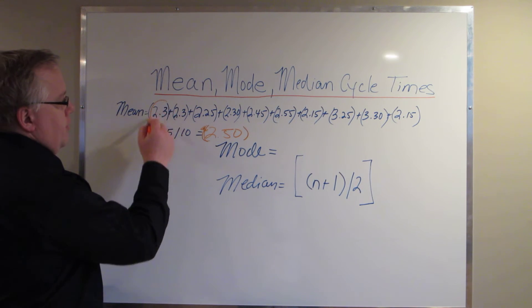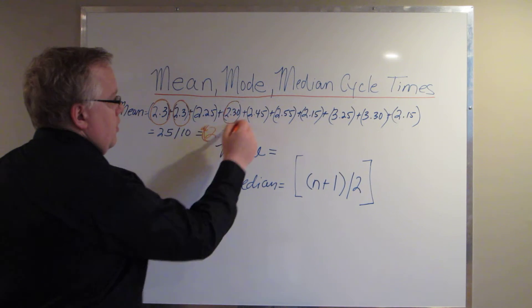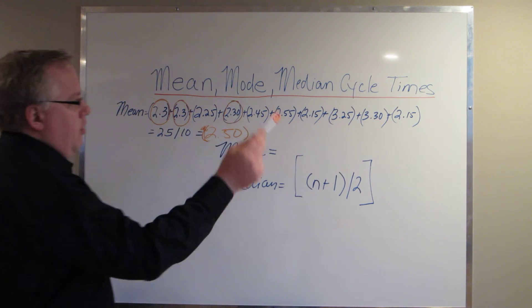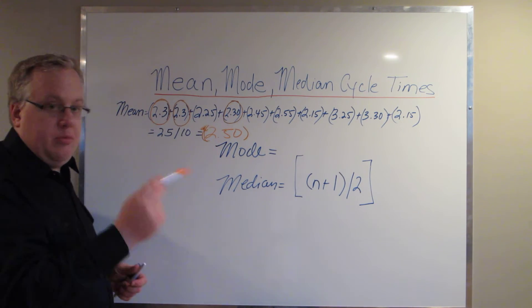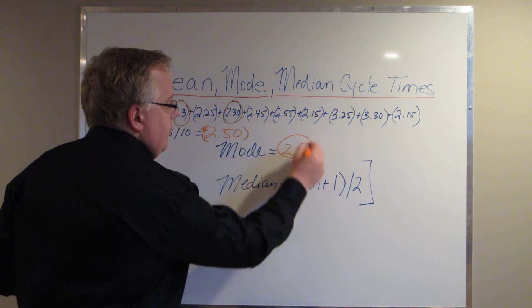So if you look across this sample, the one that occurs the most frequently is the 2.3. It occurs once, twice, and three times. And nothing else occurs more than once or twice. And the 2.3 occurs the most often. So three sample times, the mode time is 2.3.